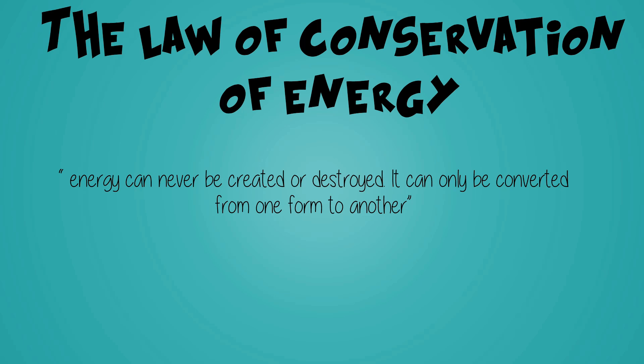The final thing to consider when looking at energy transfer and transformation is the law of conservation of energy. This law states that energy can never be created or destroyed — it can only be converted from one form to another. It may look like energy disappears, but it doesn't. It can get passed on, or sometimes it can be wasted. If an object wastes energy, it's almost always gained by another object as heat.